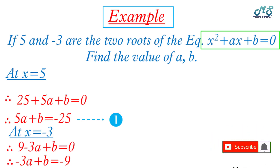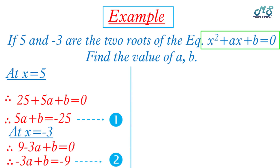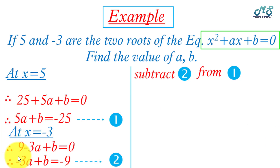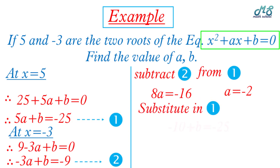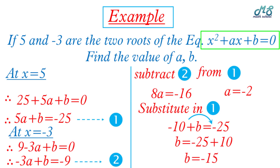So negative 3a plus b equals negative 9 — this is equation two. Subtracting equation two from equation one: 5a minus negative 3a equals 8a, and negative 25 minus negative 9 equals negative 16, so 8a equals negative 16, giving a equals negative 2. Substituting a equals negative 2 into equation one: negative 10 plus b equals negative 25, so b equals negative 25 plus 10, giving b equals negative 15. Thanks for watching — subscribe for more math videos!